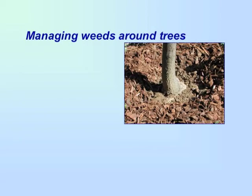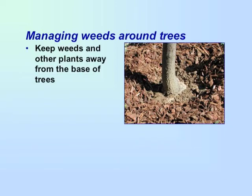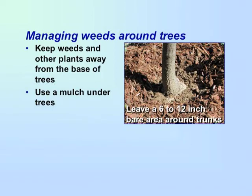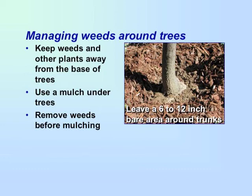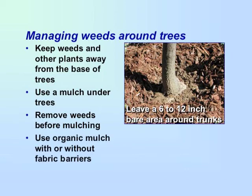Weeds around the trunk of trees are difficult to mow, can harbor pests, can promote crown diseases, and can compete for water and nutrients. Keep weeds or other plants away from the base of trees. Use mulch under trees to prevent weeds from emerging, but leave a 6 to 12 inch bare area around trunks to prevent crown disease. Remove all weeds, lawn, and other plants before mulching. You can use organic mulches with or without fabric barriers.